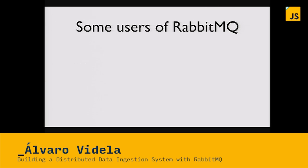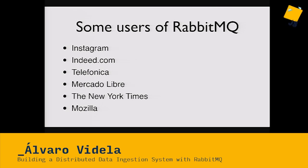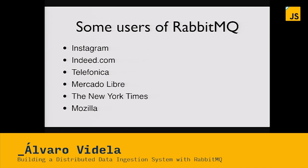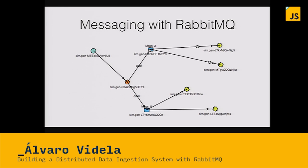Is there anybody using Rabbit? Yes — Instagram, Indeed, Telefonica, Mercado Libre, New York Times, Mozilla, the company that does the special effects for Lord of the Rings and the Hobbit — they use Rabbit — and many other companies.